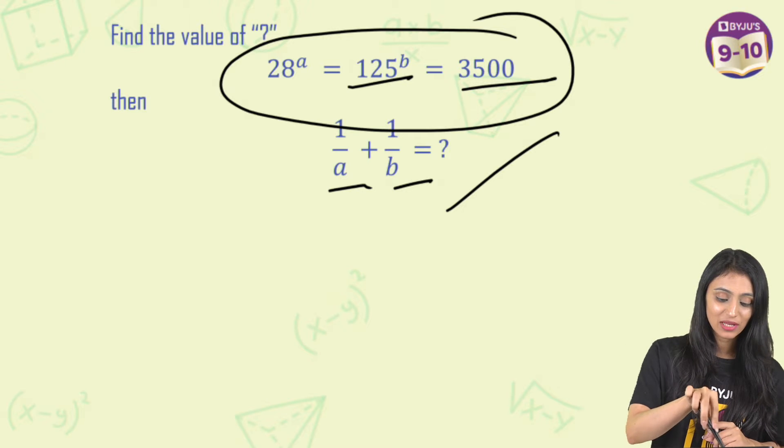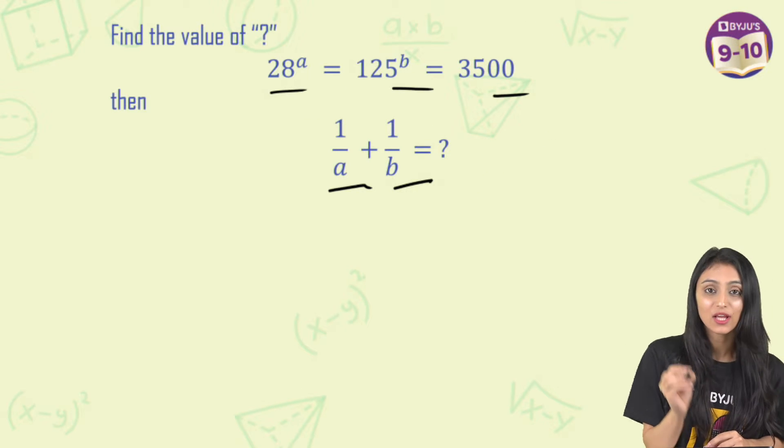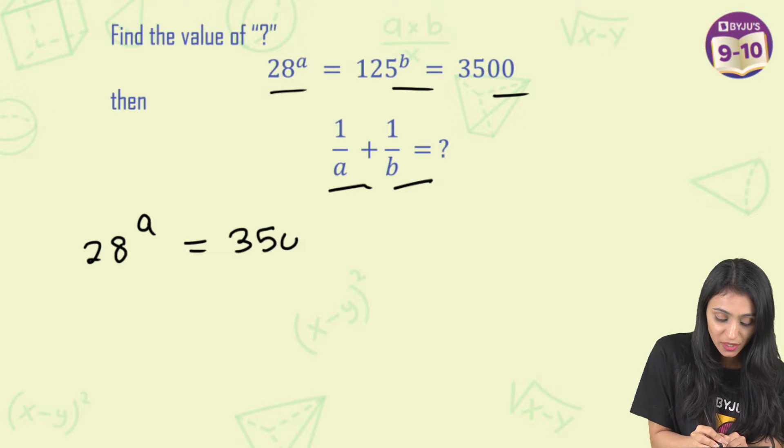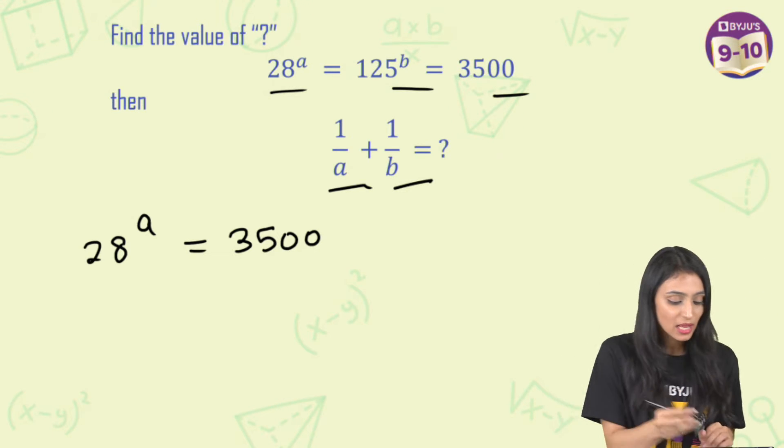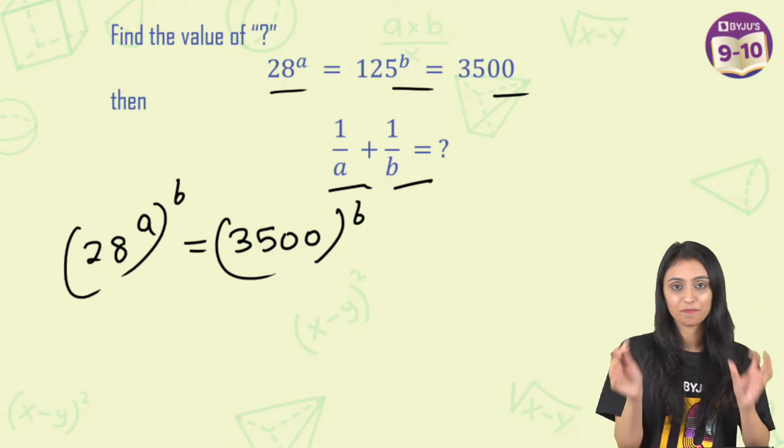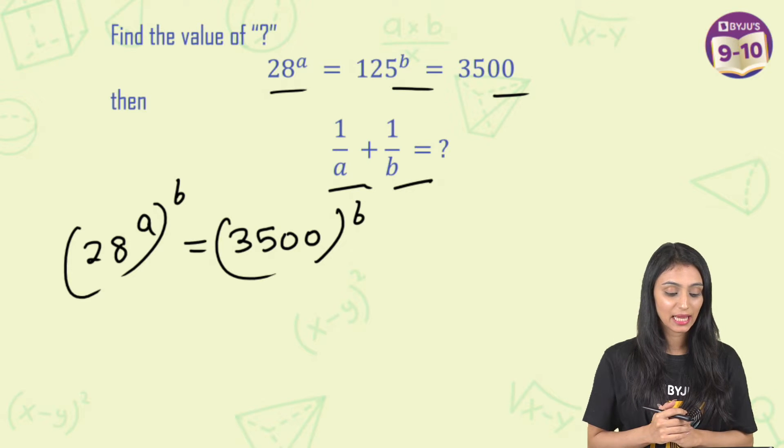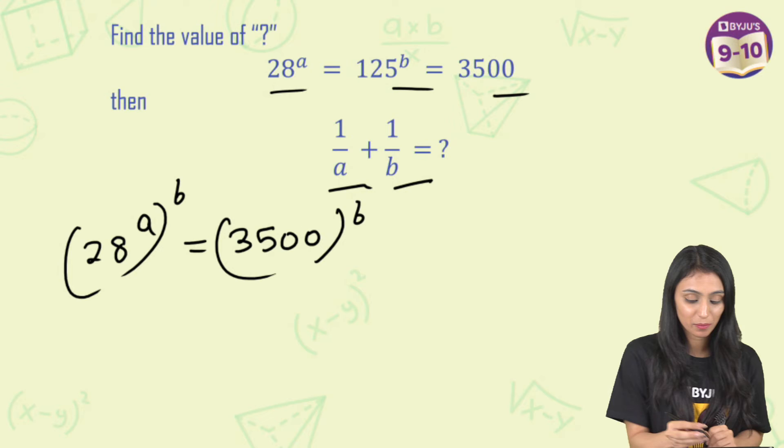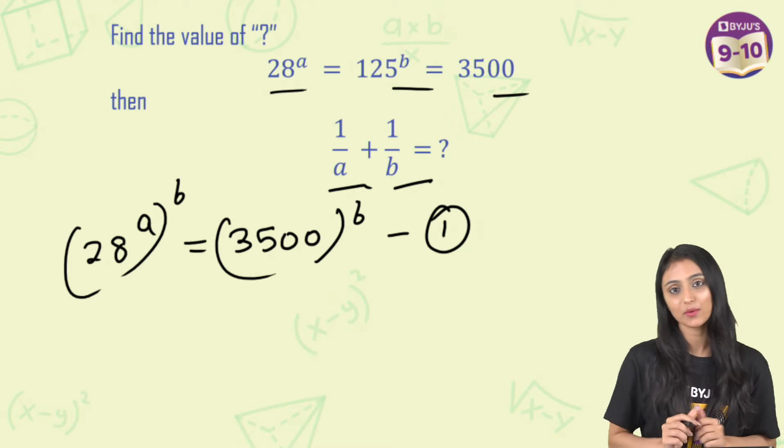Now you see that we have got that all these are equal over here, right? So I can say one thing that 28 to the power A will actually be equals to 3500 because they are equal. Now let's do one thing. Let's take power B on both sides. So it is 28 to the power AB equals 3500 to the power B and let's mark this as equation number one.